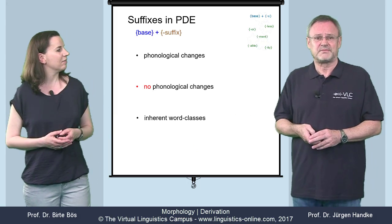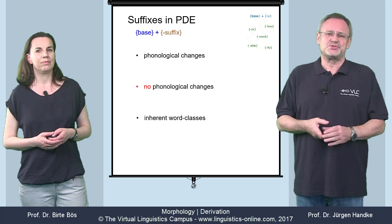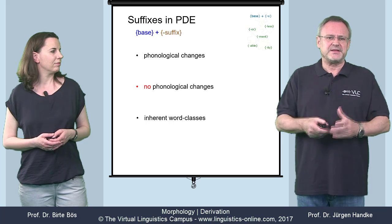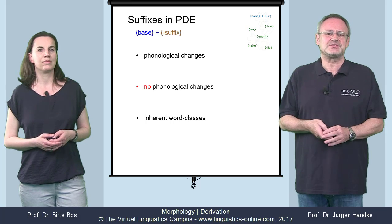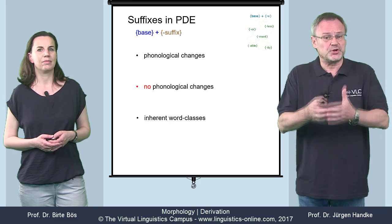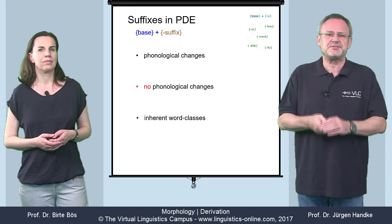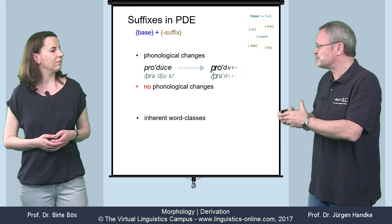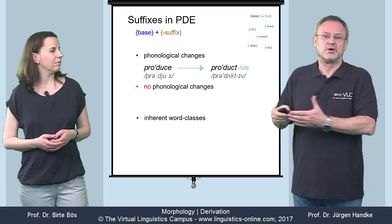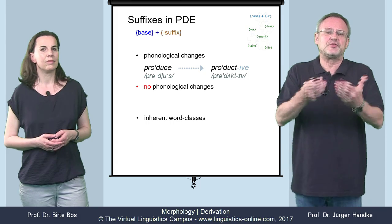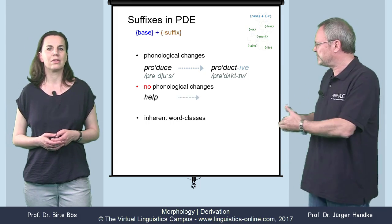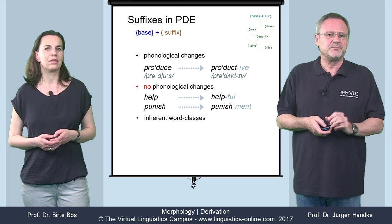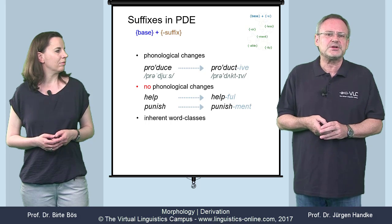Let's now look at suffixes. The most common means of deriving new words in present-day English makes use of suffixes, and they can be classified in several ways. We can look at their phonological behavior and subdivide them into suffixes that inflict phonological changes, as in produce / productive, and suffixes that are phonologically neutral, such as help / helpful or punish / punishment.